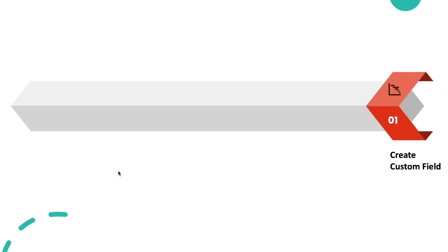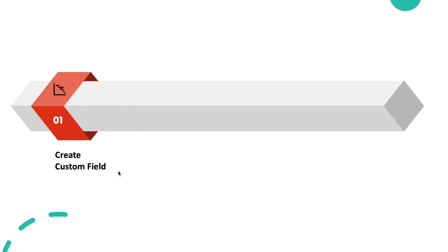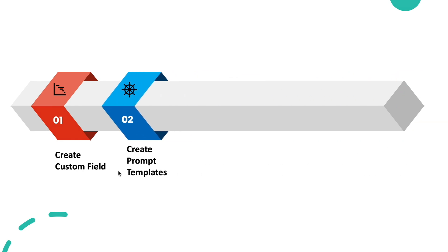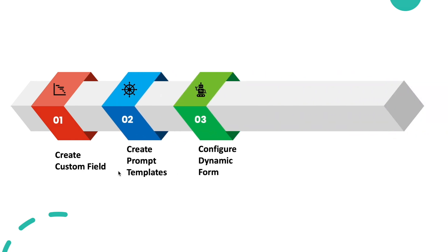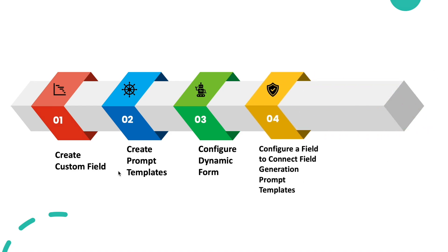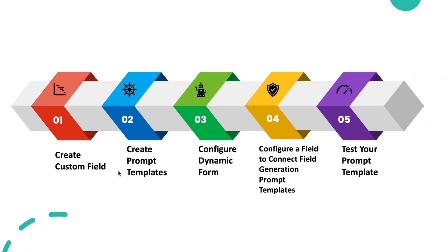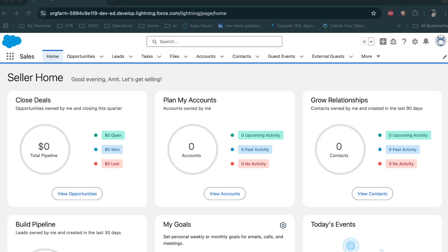To do that, here are the steps we need to perform. First, create a custom field, or you can use a standard field that you want to use. Then create a prompt template, use that field in the prompt template, and configure a dynamic form to use that prompt template. Connect the generated prompt template with a custom field, and then test your prompt templates.